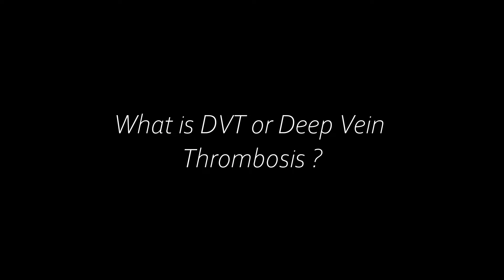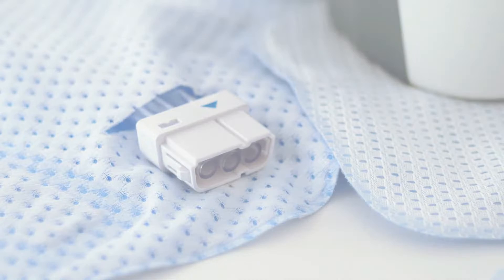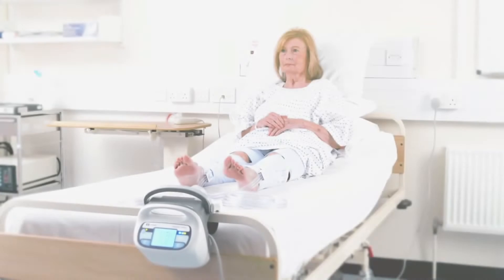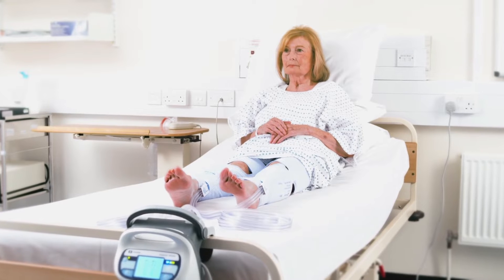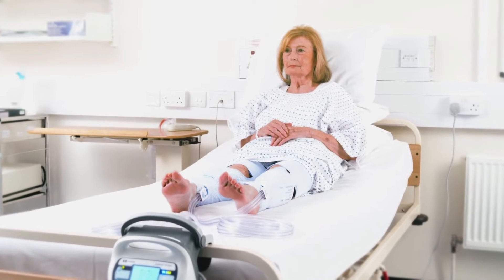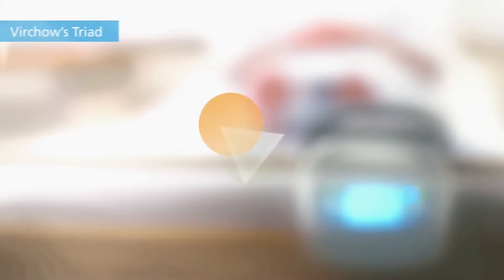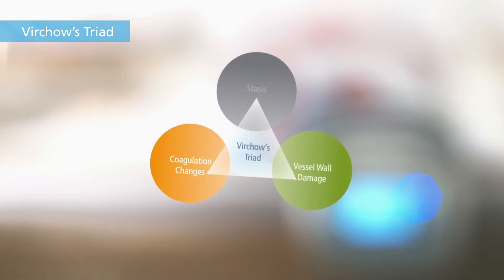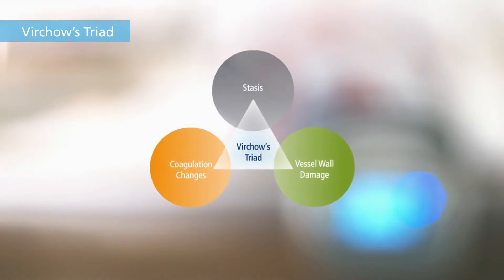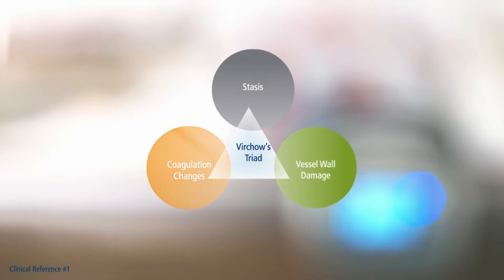So what is DVT or deep vein thrombosis? Deep vein thrombosis occurs when a blood clot develops in one of the deep veins in the body. Without treatment, a DVT can cause a potentially life-threatening condition called pulmonary embolism, which occurs when a blood clot breaks off from a vein and travels to the lungs.